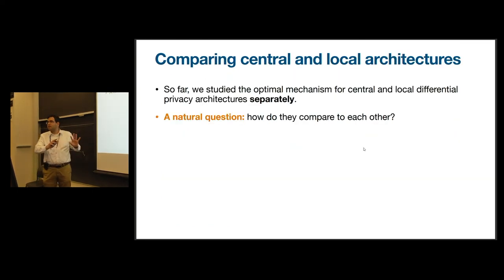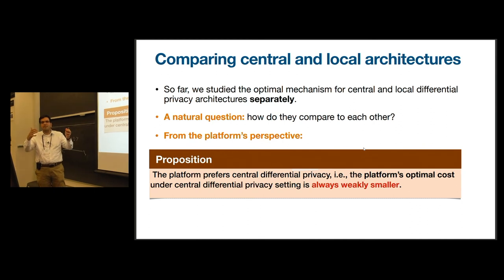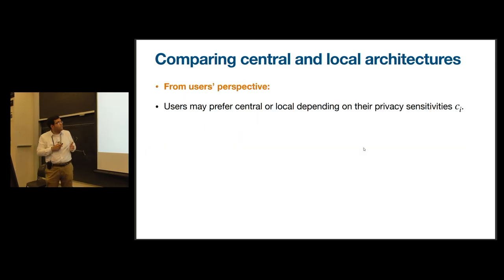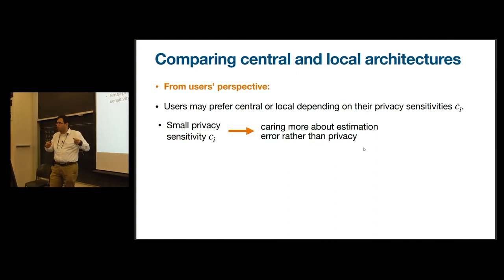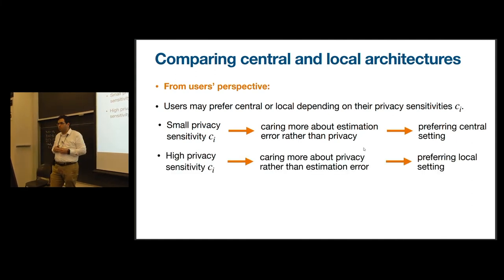The last two slides will be about comparing these two architectures. So far, I solved everything separately for central and local, but one may ask, how do they compare to each other? The answer differs whether you look at it from platform's point of view or the user's. From platform's perspective, we show that the platform always prefers central, meaning that the platform's optimal cost will be always weakly smaller for the central, which makes sense. Because in the central case, the platform gets the raw and non-private data and decides on making it private by itself, while in the local, the user's making it private before sharing it with the platform. However, for the user, the story depends on the privacy sensitivity. If the privacy sensitivity is small, meaning that the users want to learn the drug efficacy, they will prefer the central. But if it's high, meaning that the users care a lot about their privacy, they would prefer the local.